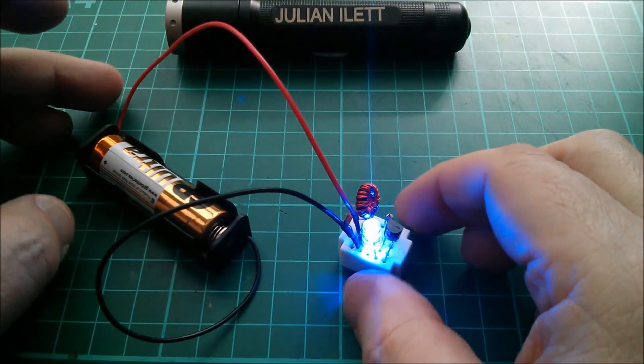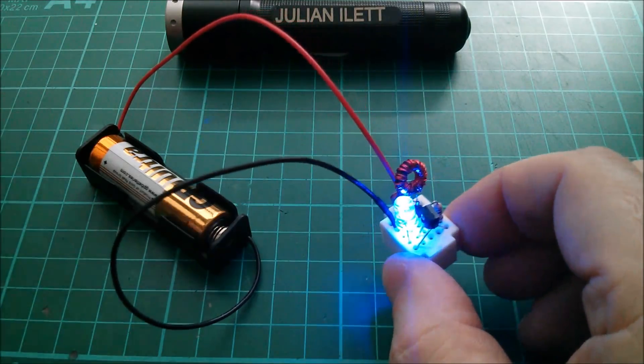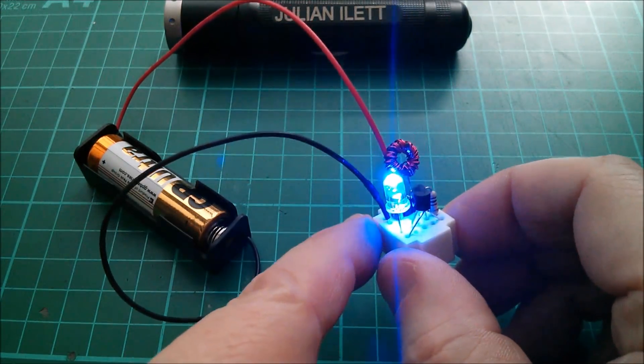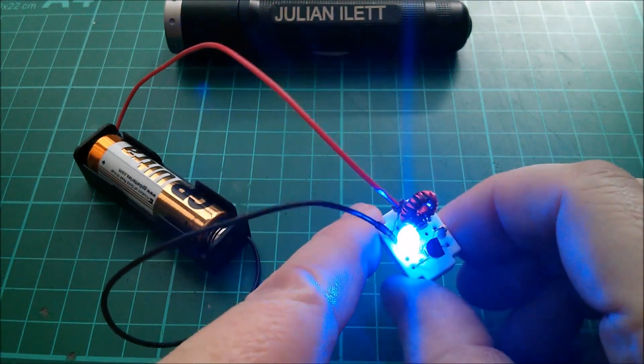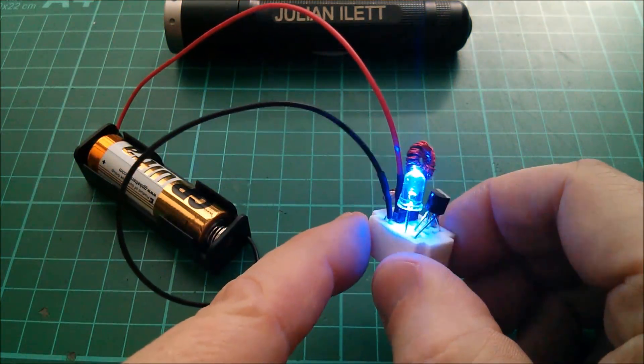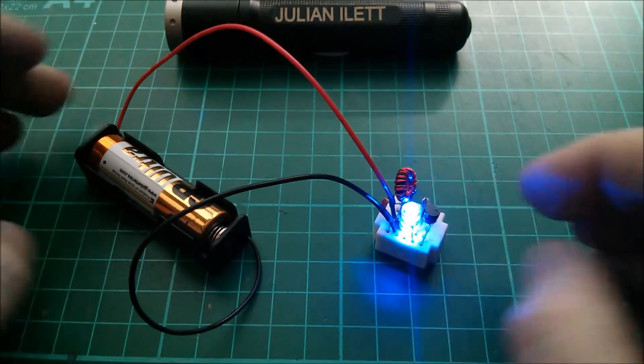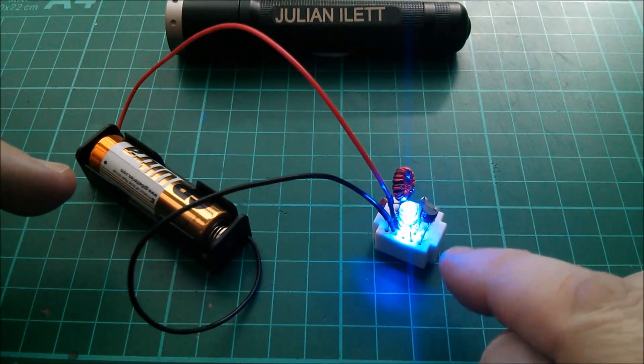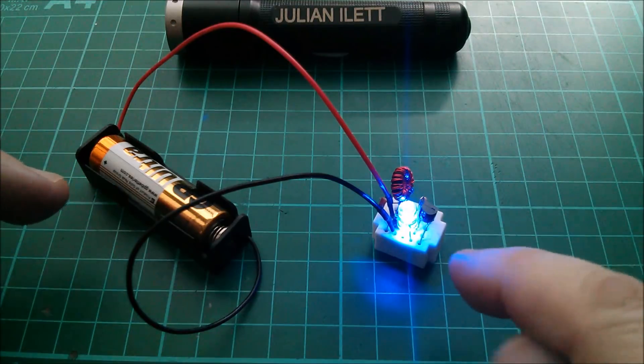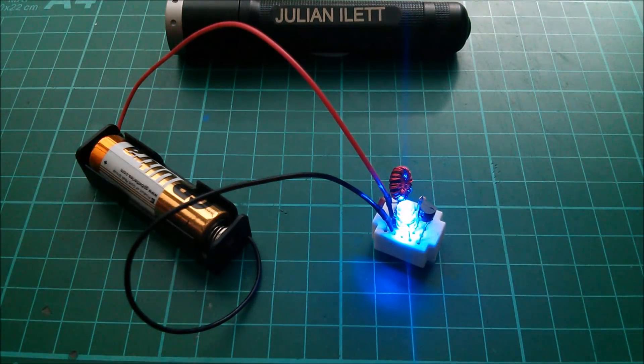Good afternoon all. I thought I'd dig out my little joule thief circuit which I built on this tiny breadboard and you can see that's working absolutely fine. We've got a nice bright blue LED there. The advantage of the joule thief circuit is that you can light up an LED which wouldn't normally light unless you put about three volts through it from a 1.5 volt battery.